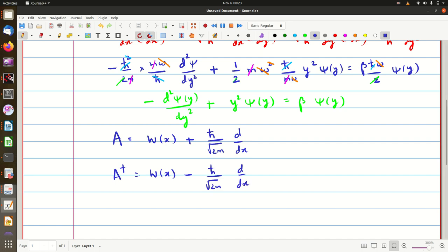That is what when we formed the A dagger A, these two factors gave us that minus ℏ squared upon 2m d squared by dx squared. And then of course, we had two more factors which were w squared of x minus ℏ upon root 2m w dash of x. So we wrote this whole thing as b1 of x so that this will have the form of a Hamiltonian.